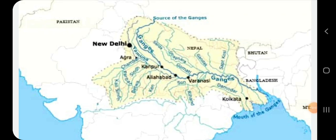Hello viewers, today we are going to start the rest of the part of chapter number 2, the Northern Fertile Plains. Our today's topic is the Ganga Basin and the Brahmaputra Basin.